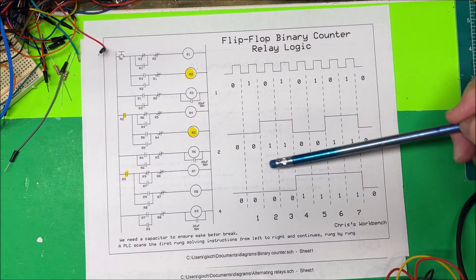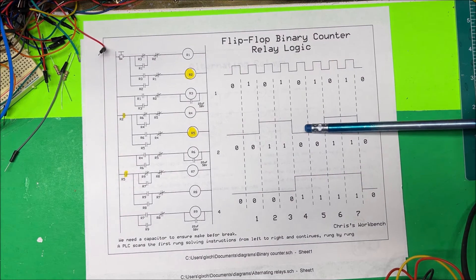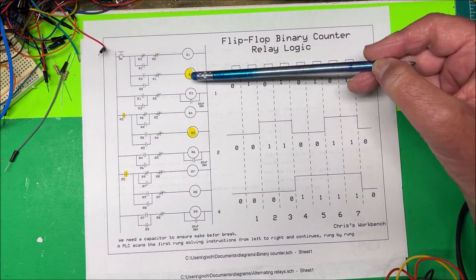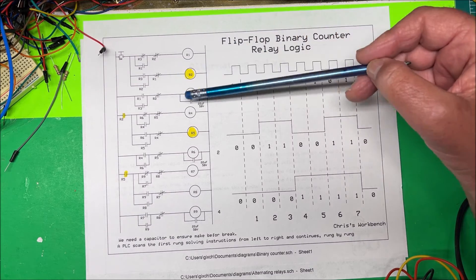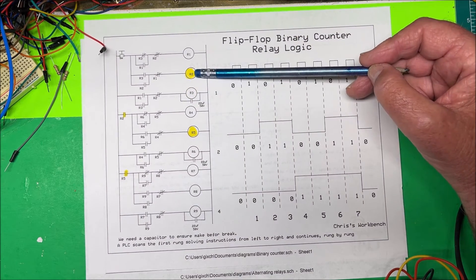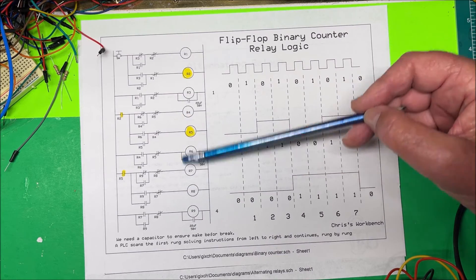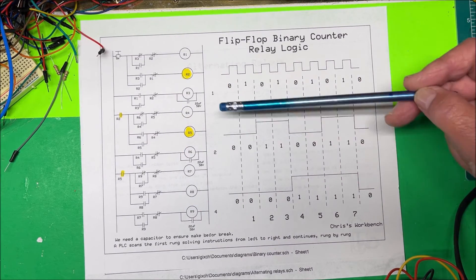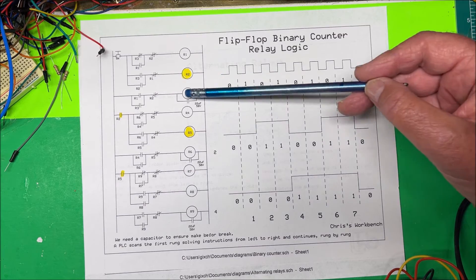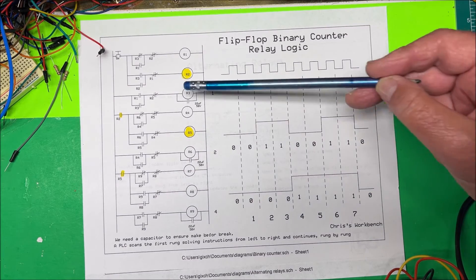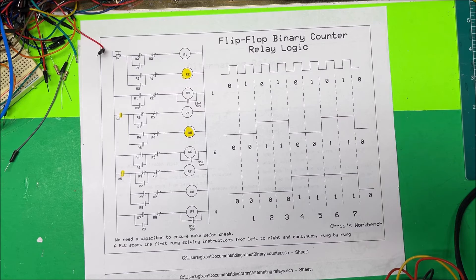This is your typical diagram of how these flip-flops work. Here's the first one, and R2 here is going to control the second flip-flop. Basically just three flip-flops or three alternating relays. This is going to count to seven. I'll show you how that works.